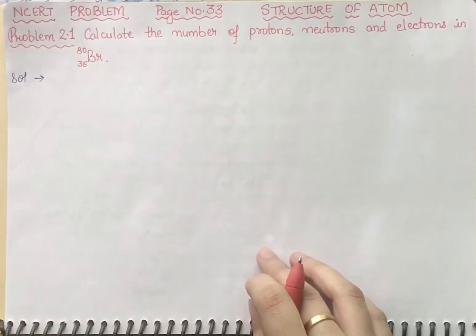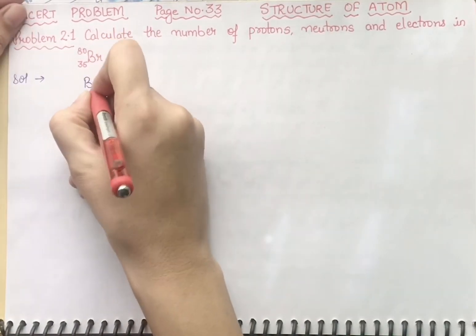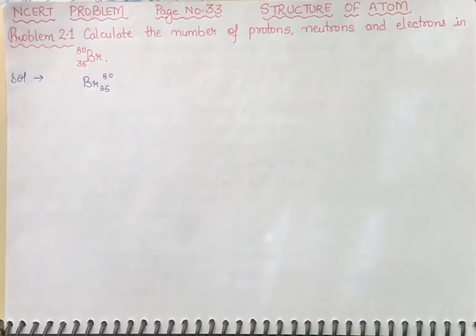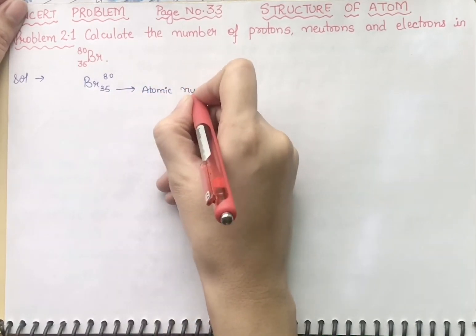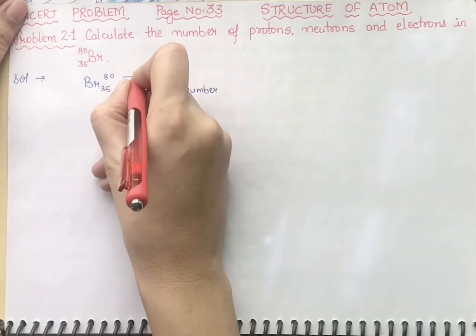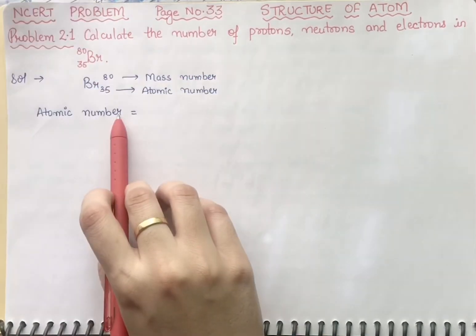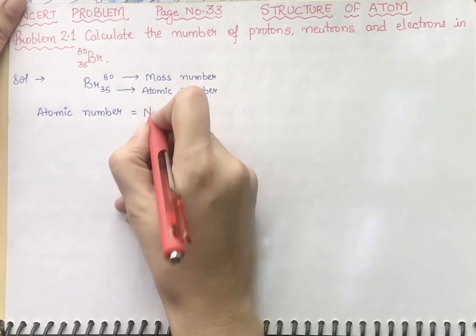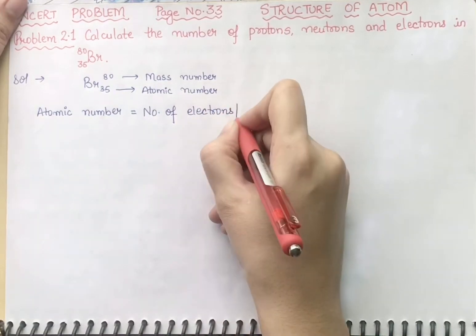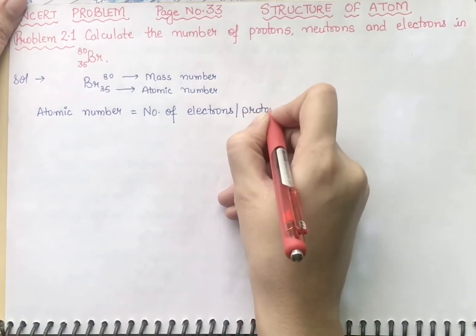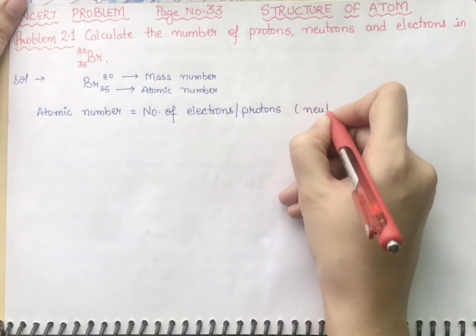So for bromine, we write the notation where 35 represents the atomic number and 80 is the mass number. Now, the atomic number of an atom represents the number of protons, and for a neutral atom, it also equals the number of electrons.